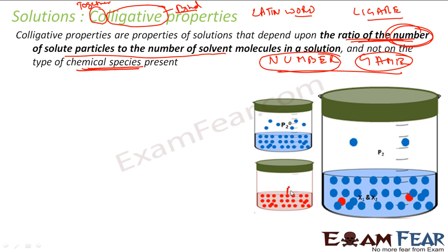For example, if A and B are my two components, this property will depend on the force of attraction between A and B. Some solutions show positive deviation from Raoult's law, some show negative deviation. So the pressure increase or decrease for a given solution is a colligative property, because it depends on the number of A and B particles and also the binding force of attraction between them. The word colligative means bind together.